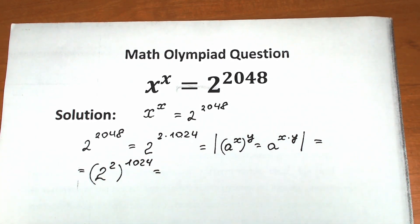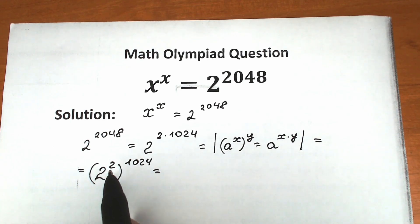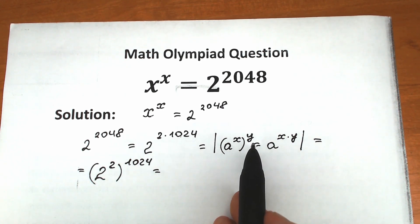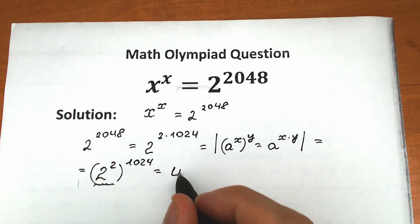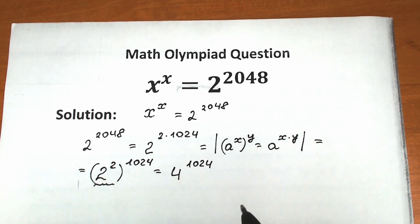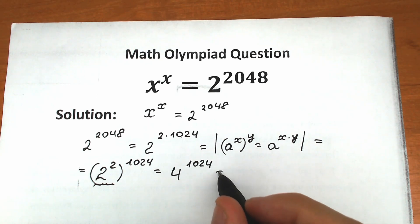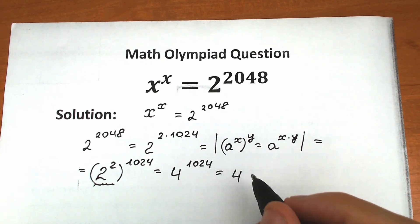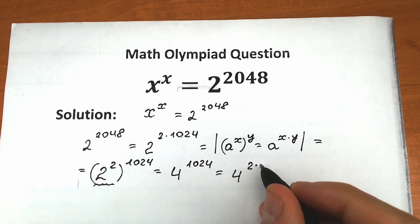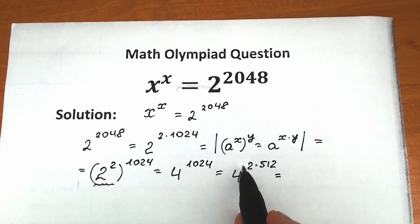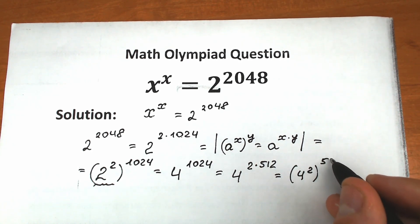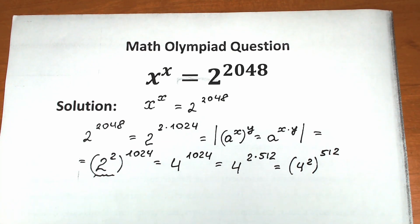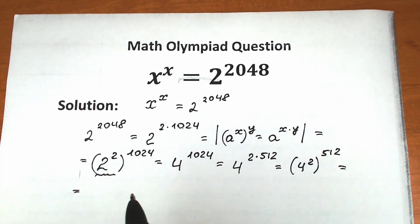Since 2 squared equals 4, we now have 4 to the power 1024. Let's do the same step once more: rewrite 1024 as 2 times 512, so we have 4 to the power 2 times 512. Bringing the 2 inside gives us 4 squared raised to the power 512, and since 4 squared equals 16, we have 16 to the power 512.